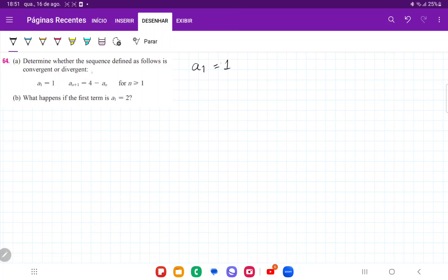They tell us how to get the next term. If we're at a1, it tells us how to go to a2 using a_{n+1}. So a2 is going to be equal to 4 minus the previous. 4 minus 1 gives us 3.